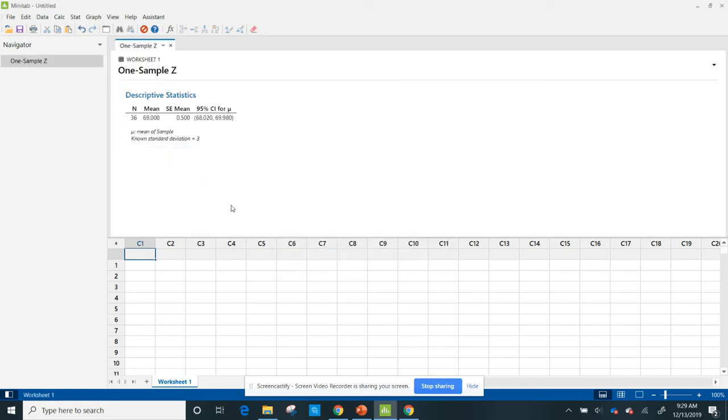I'm given information. I ran a 1 sample Z. I have a sample size of 36, a sample mean of 69. Don't worry about the standard error of the mean, but here is my confidence interval. The lower bound is 68.020, and the upper bound is 69.980. Minitab did everything by hand.